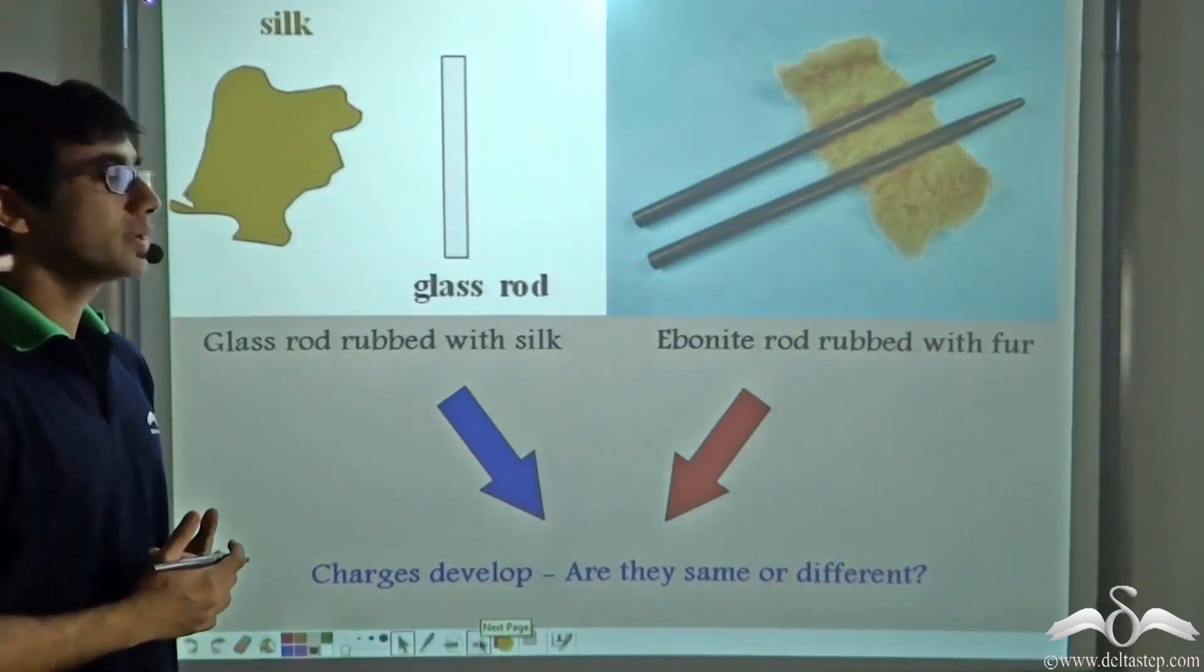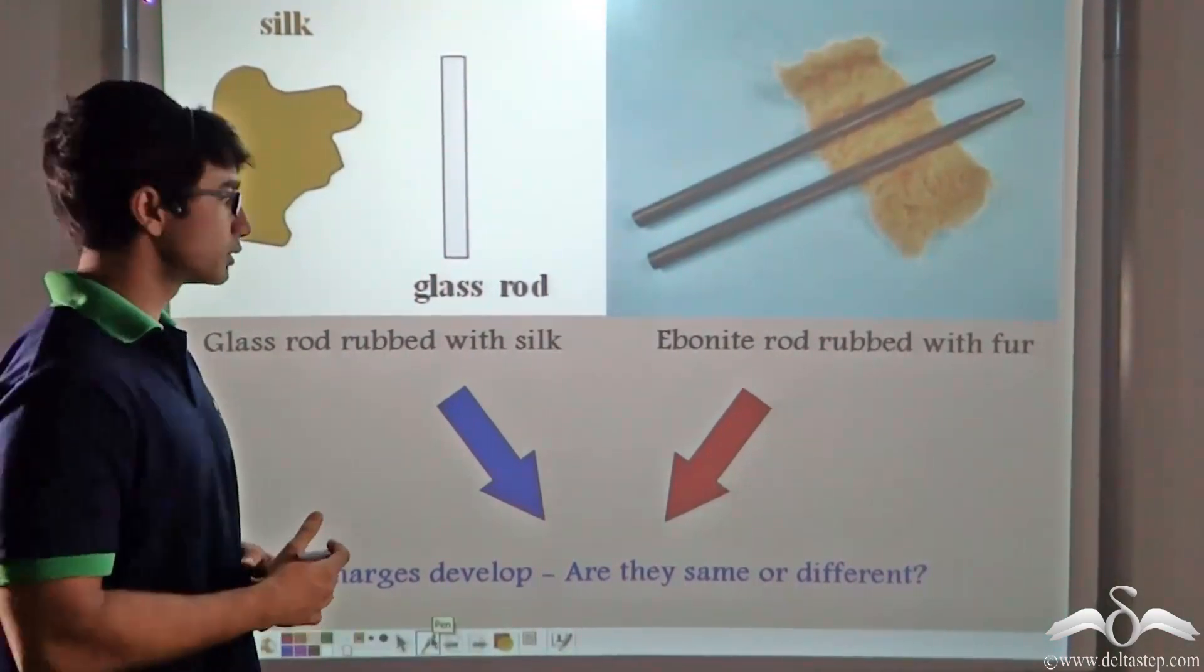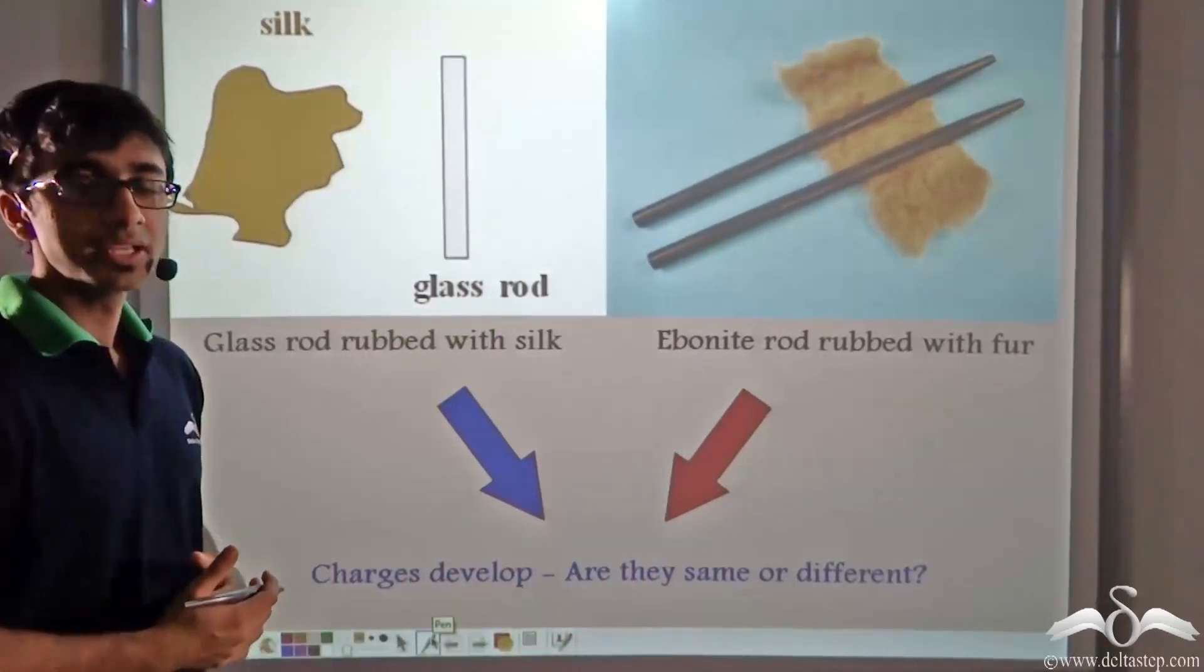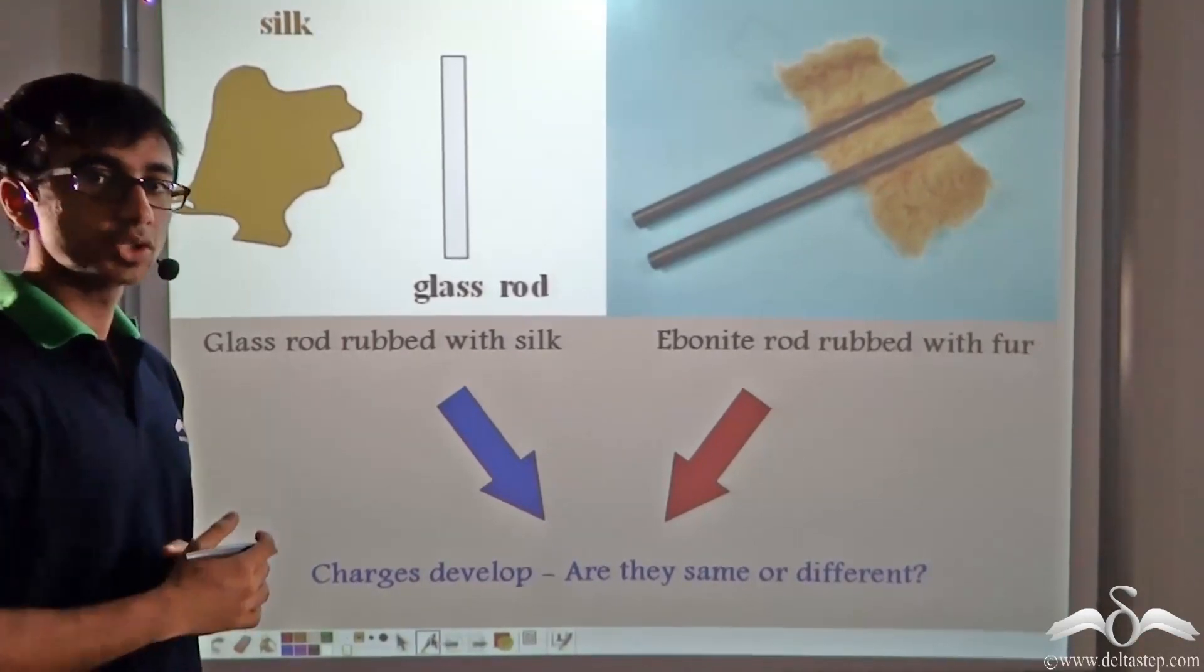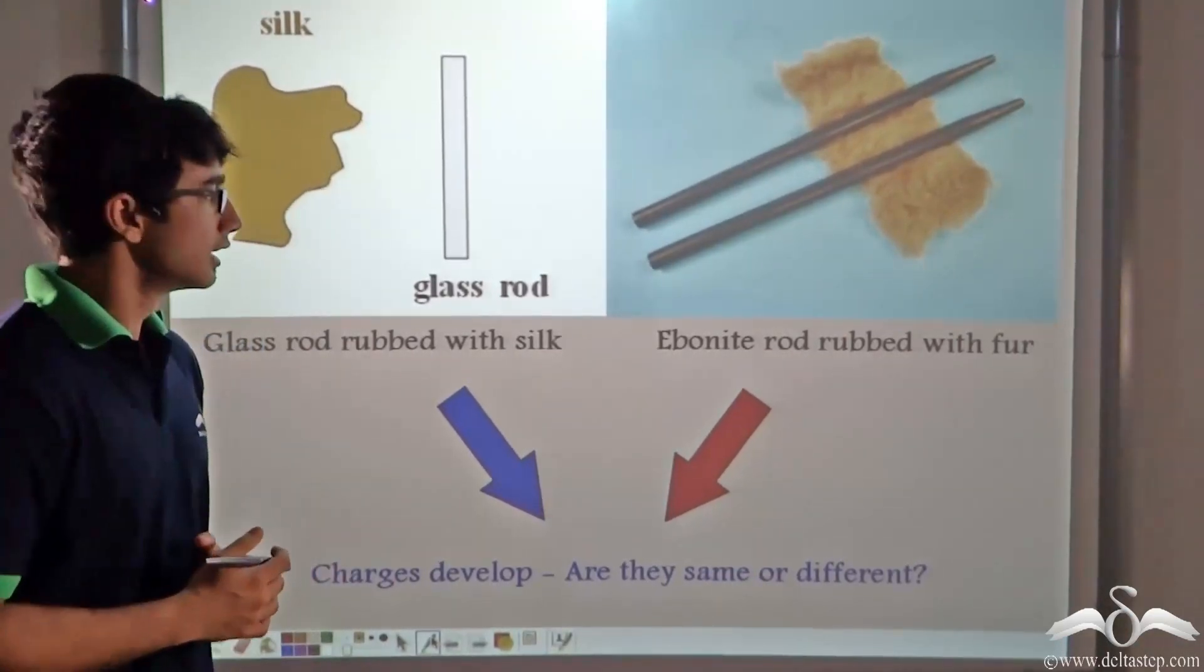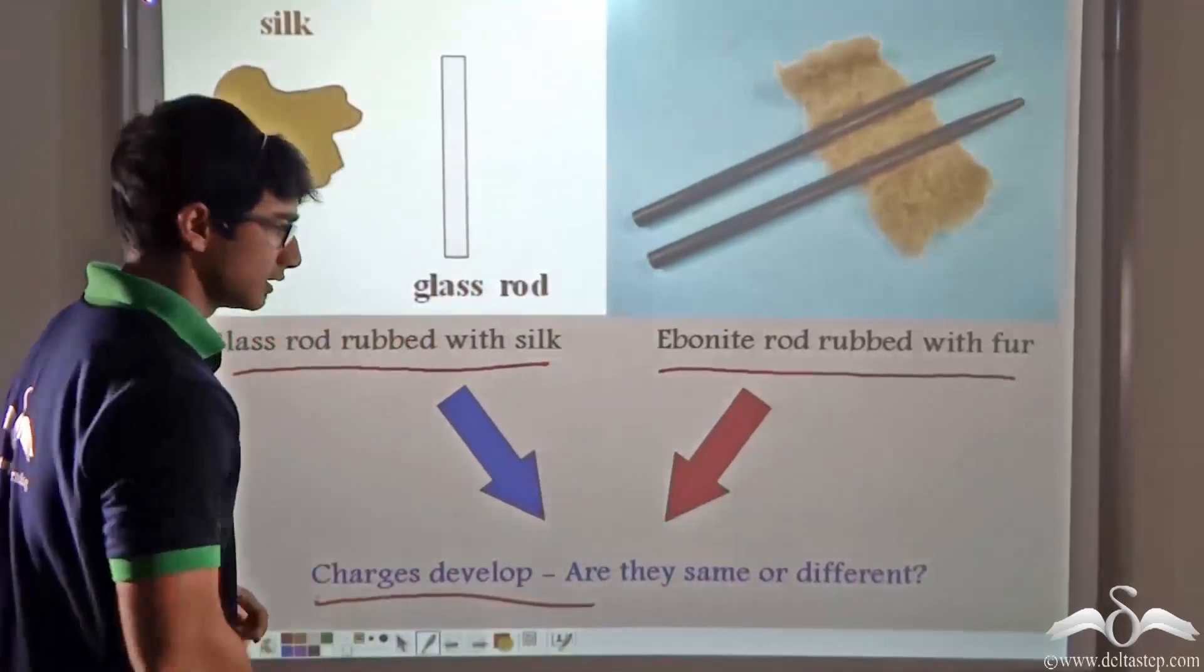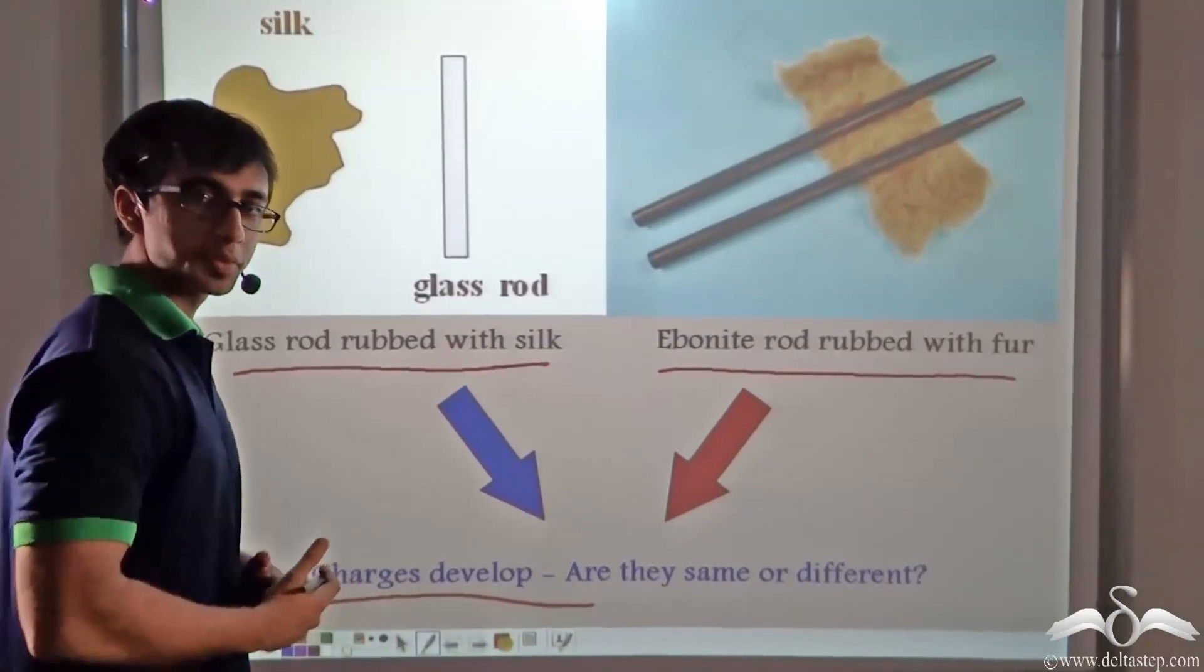So now we consider two instances. We consider the first instance where glass rod is rubbed with silk and we consider a second instance where ebonite rod is rubbed with fur. Now I already mentioned that when one body is rubbed against another body, charges are developed. Much like you saw in the case of the balloon hair and can and balloon fur and the bits of paper. Now in both these cases, when glass rod is rubbed with silk and ebonite is rubbed with fur, charges are developed. Now do you think these charges are same or do you think the charges are different? Well, why don't we find out?